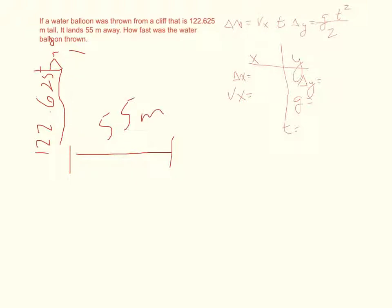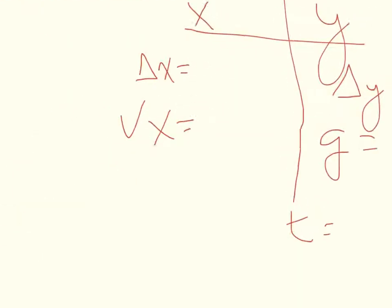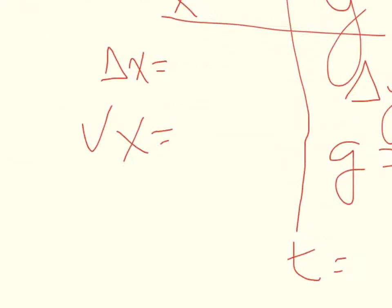Then I'll come over here to my variable list and I'll put that information where it belongs. So I know that 55 meters is in the x direction, I know that it's a change in distance, so it belongs here in Δx, 55 meters.